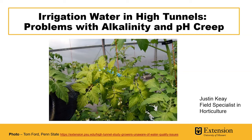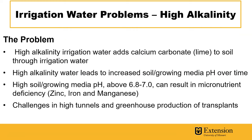You can see in the picture the yellowing tomato leaves that are showing signs of iron deficiency related to high soil pH that has been influenced by alkaline irrigation water. The problem is that high alkalinity irrigation water adds calcium carbonate — which is the same thing as lime — to soil through your irrigation water. These high alkalinity levels can lead to increased pH of soil and growing media over time.